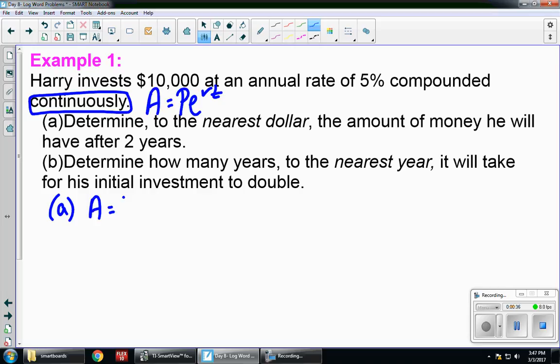So A = Pe^(rt). A is the final amount, which is what I'm looking for. P is the initial amount, which is $10,000. E is a number. My rate is 5%, but we convert that to a decimal of 0.05. And T is 2 years.